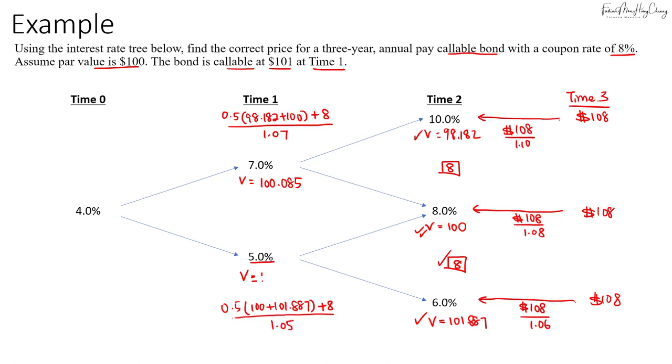Now in this case, because the bond can be called at time 1, we need to check if any of the price here exceeds $101. We'll see that it's only for the lower node that is more than 101.